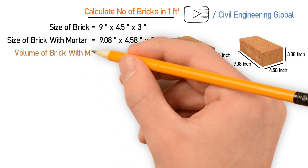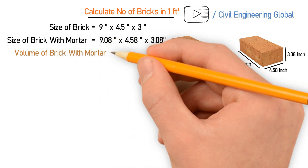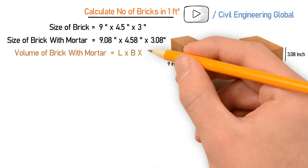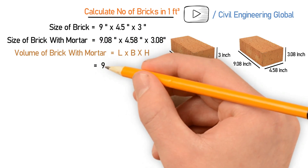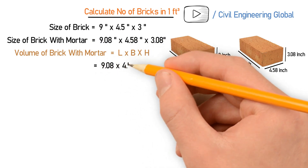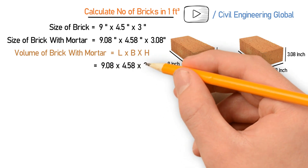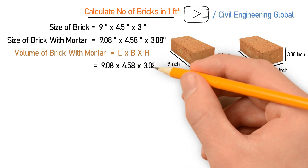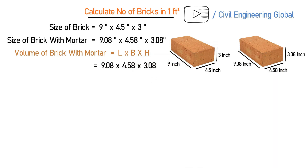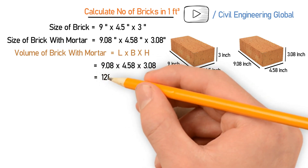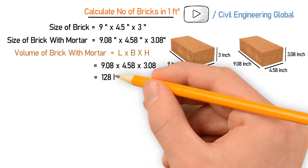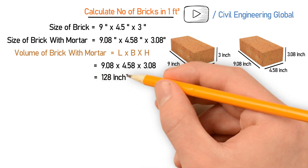Let's first calculate the volume of a brick with mortar. For this we have the formula: length multiplied by breadth multiplied by height. So the length is 9.08, width is 4.58, and height is 3.08. After calculating this you will get the volume, which is 128 cubic inches.